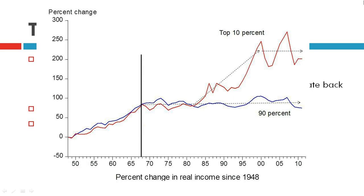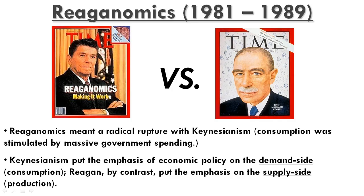You can see the gap between the wealthy and the poor begin to really separate by the mid-1980s. With Reaganomics, it is a split from the Keynesian approach that we saw beginning in the 1930s with FDR's New Deal.